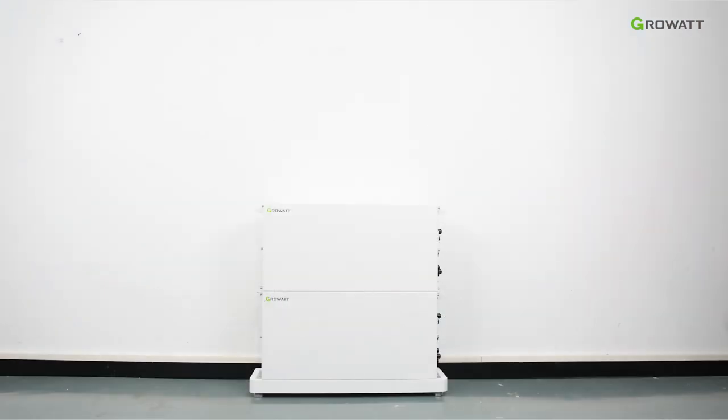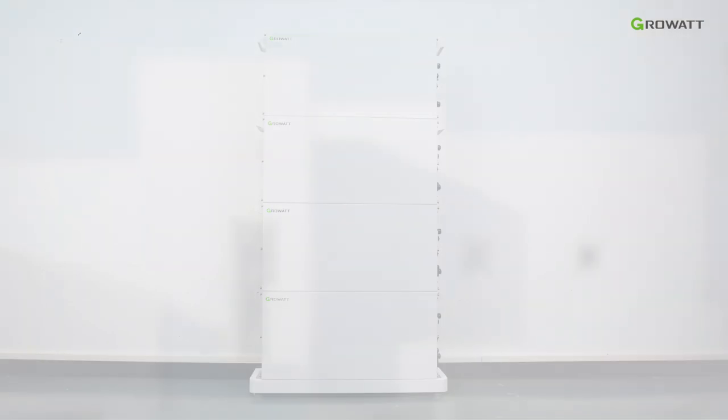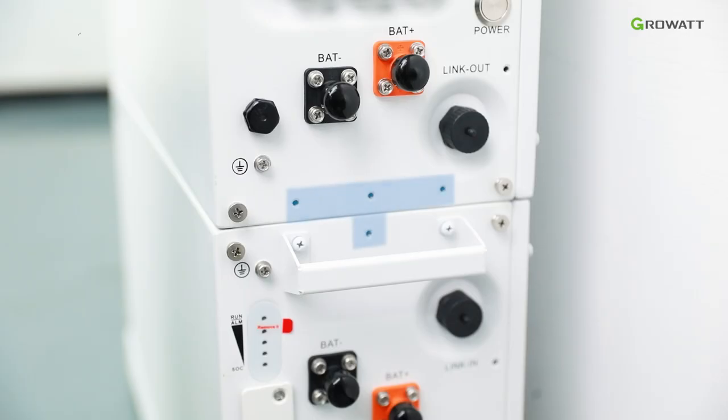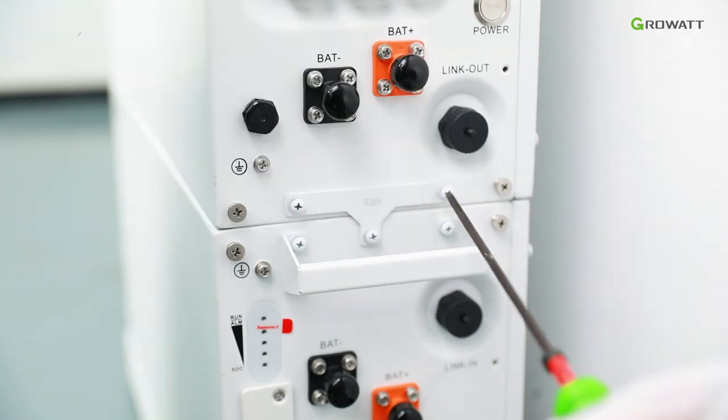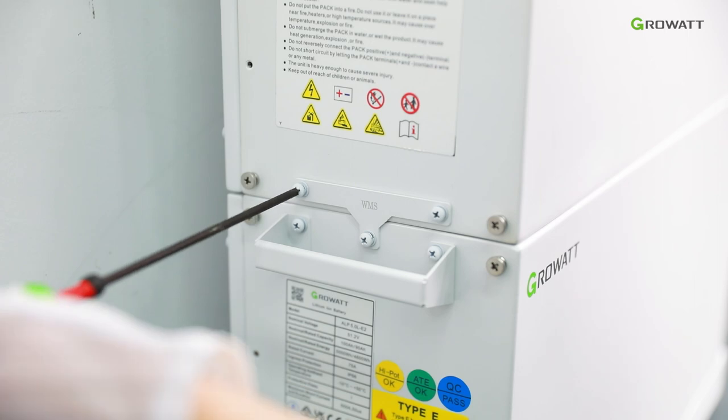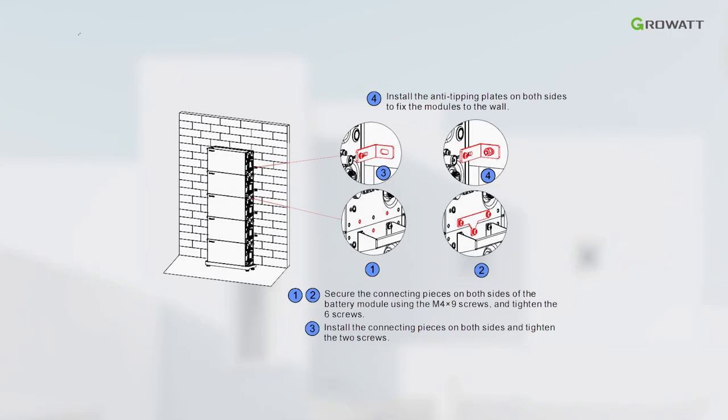Proceed to stack the remaining ALP battery modules one by one. Install the connecting pieces on both sides and tighten the three screws. Make sure all the connectors on both sides of the ALP battery are well connected. Install the anti-tipping plates on both sides to fix the modules to the wall.